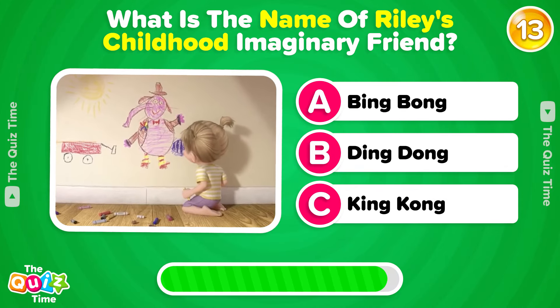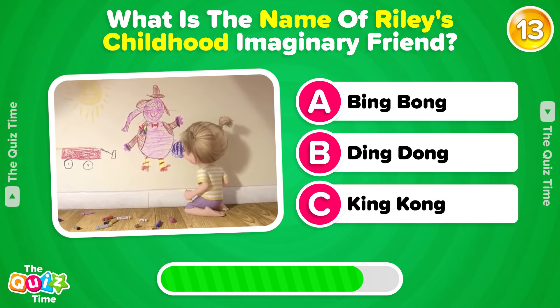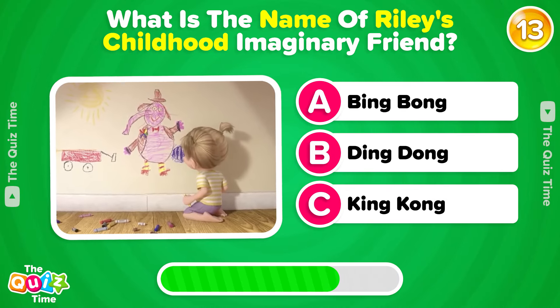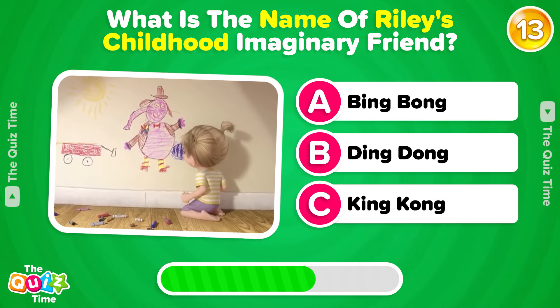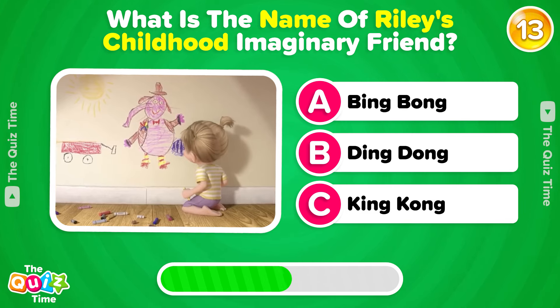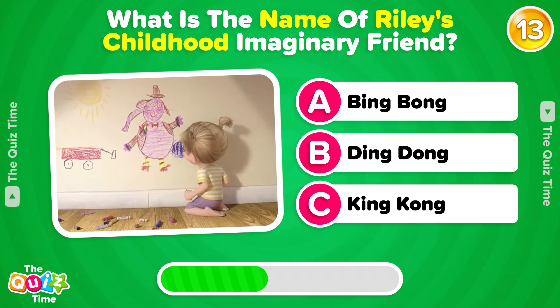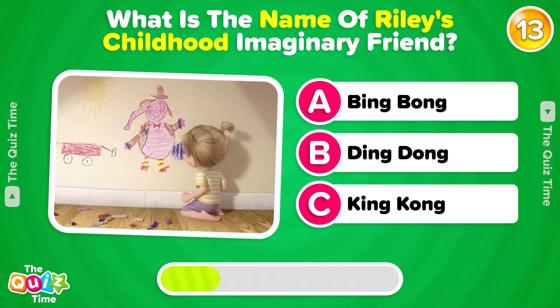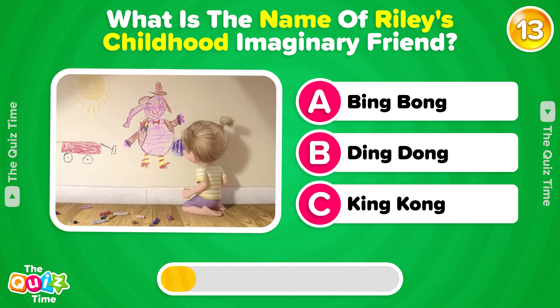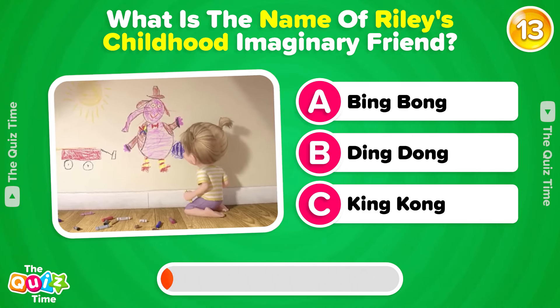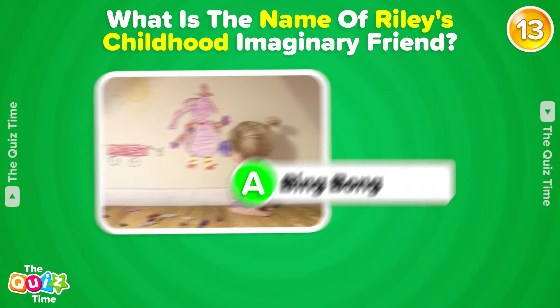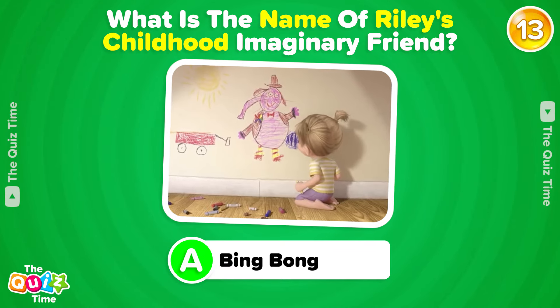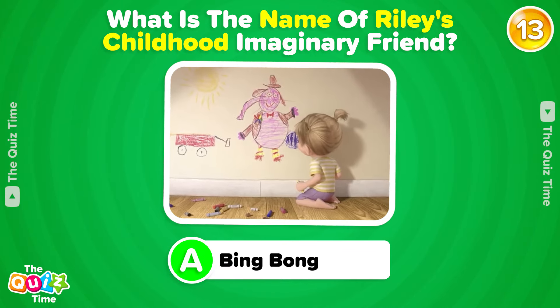What is the name of Riley's childhood imaginary friend? A, Bing Bong. B, Ding Dong. C, King Kong. The correct answer is A, Bing Bong.